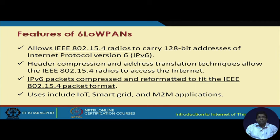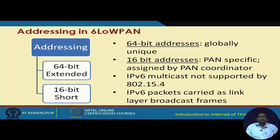6LoWPAN can be used for IoT, smart grid applications, smart home applications, M2M applications, and many other similar applications. For addressing in 6LoWPAN there are two types of addresses: a 16-bit short address, which is for PAN-specific communication assigned by the PAN coordinator for communicating within the personal area network, and a 64-bit extended address used for globally unique addressing throughout the network.